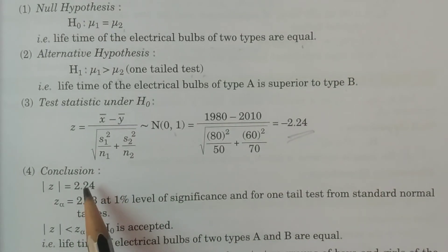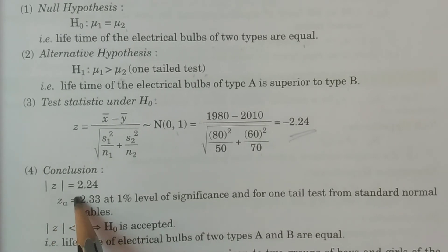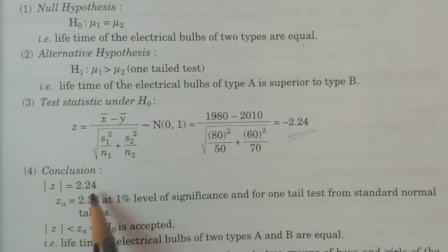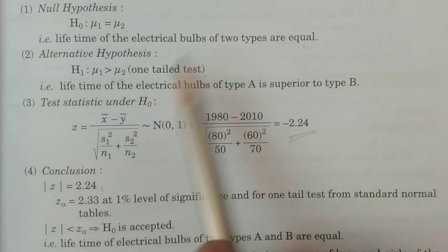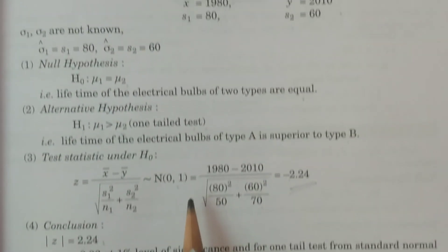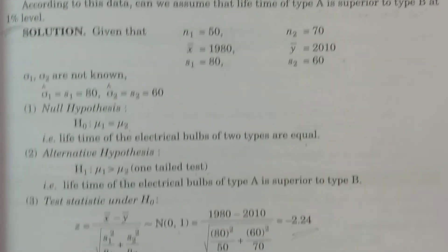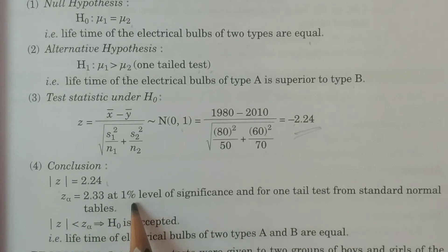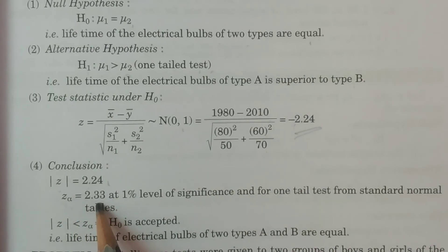In the fourth point we compare and draw a conclusion. Since Z is negative, we take |Z| = 2.24. For the tabulated value, at a one-tailed test and one percent level of significance — as specified in the problem — from the standard normal tables, Z_α = 2.33.